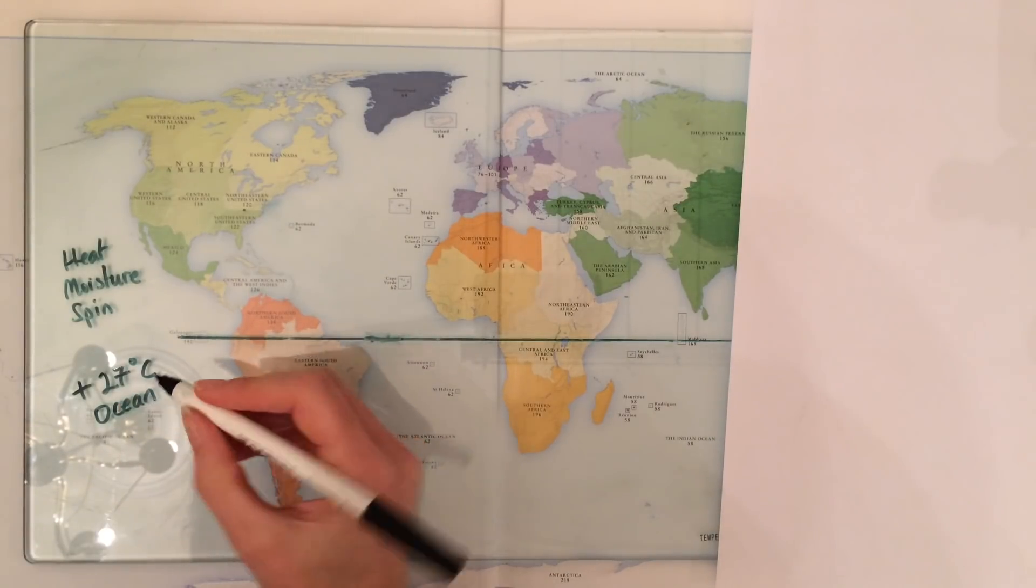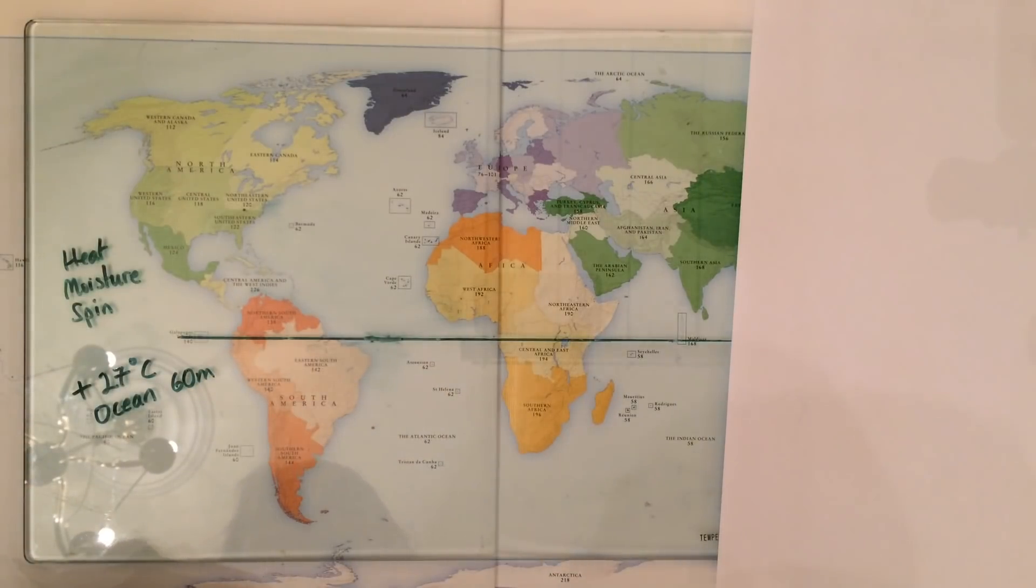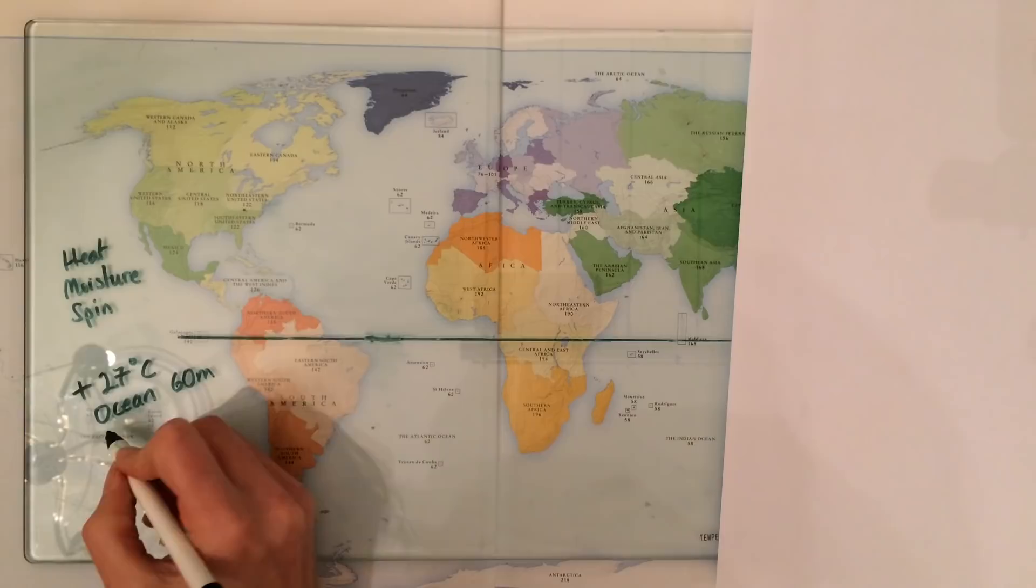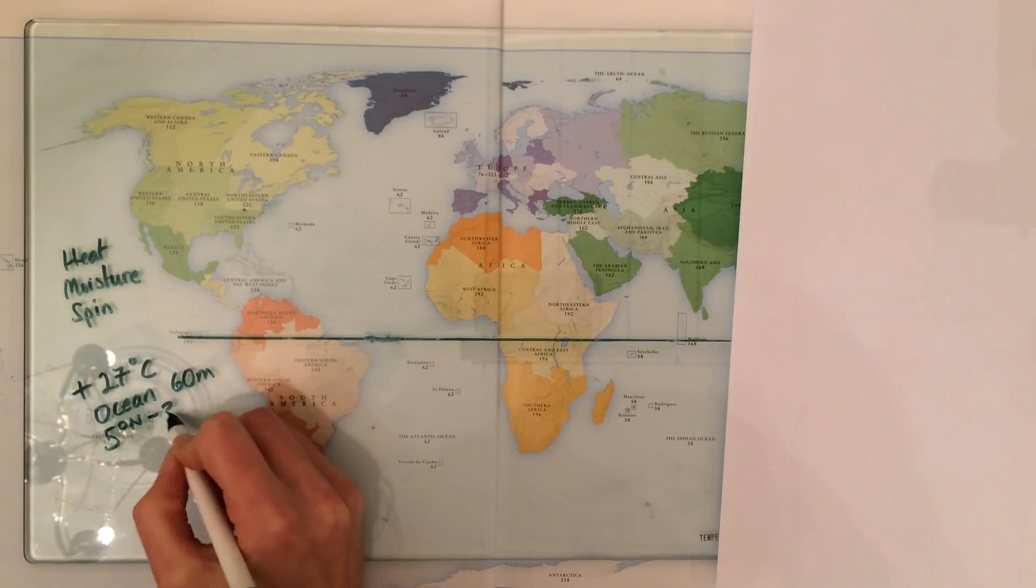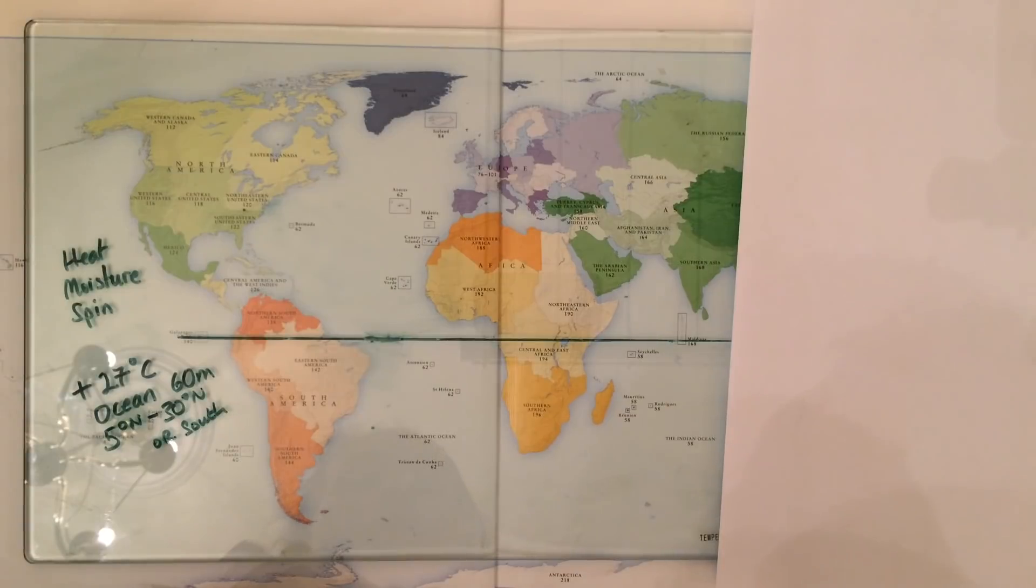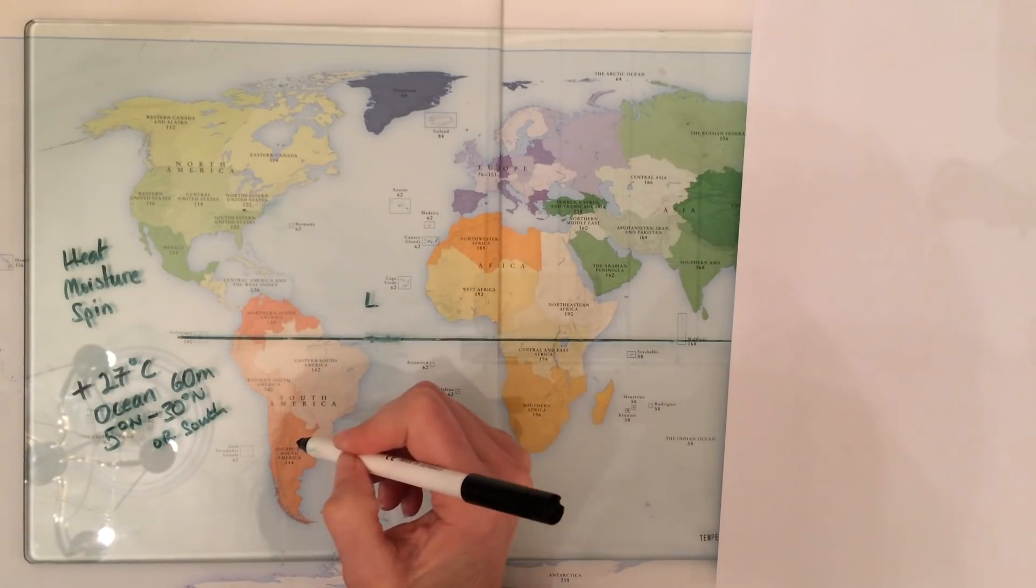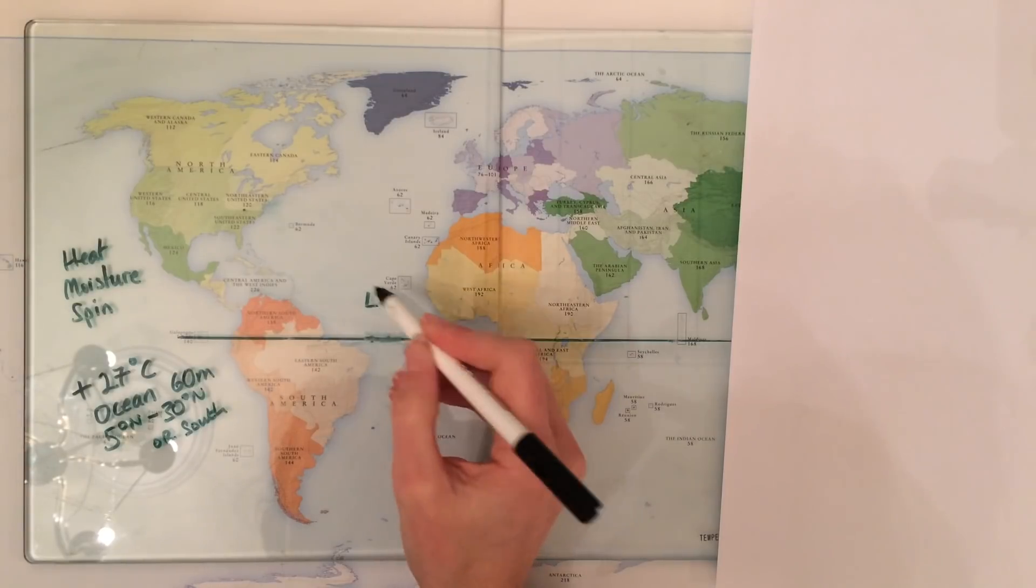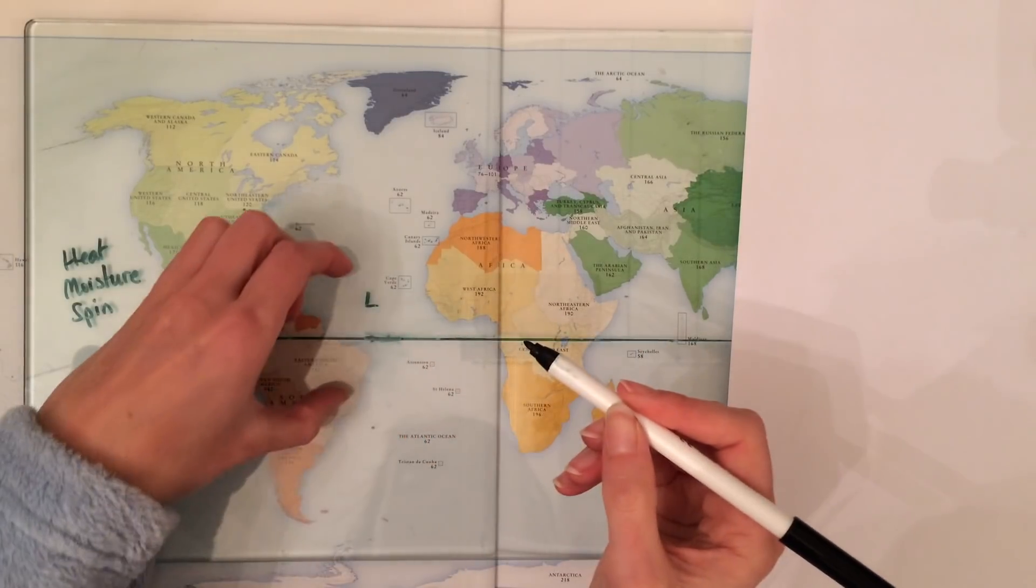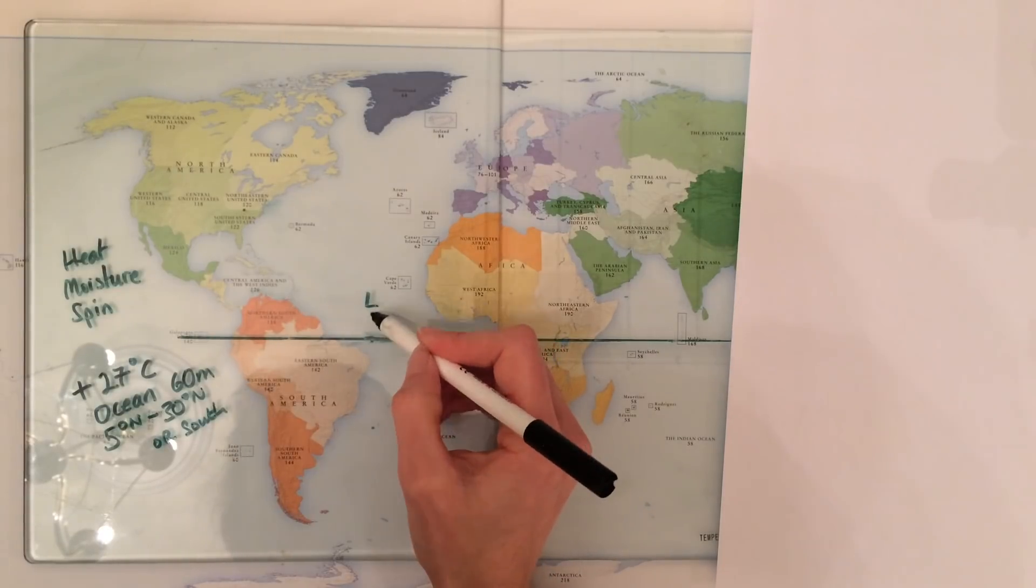That ocean needs to have warmth up to about 60 meters in depth, and we also need the spin. We're talking between five degrees north of the equator and 30 degrees north or south of the equator, and that will allow the storm to spin. Around about here we would get tropical storms forming. We're over an ocean, it's nice and warm as it's between the tropics, and it's far enough north to be able to spin.